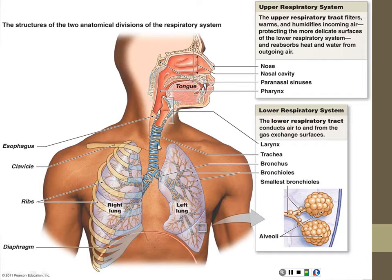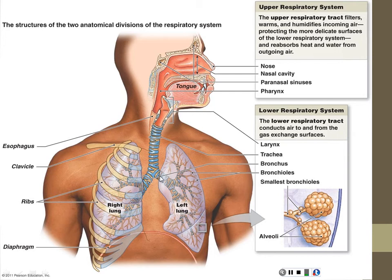From there we get into the lower respiratory tract. This whole apparatus is the larynx — commonly called the voice box, though we usually think of it as just the vocal folds. The larynx is actually the whole top part of the lower respiratory tract. From the larynx we go down into the trachea, a rigid tube that divides into the left and right main stem bronchus, and those disappear into the right and left lung. That's upper and lower.